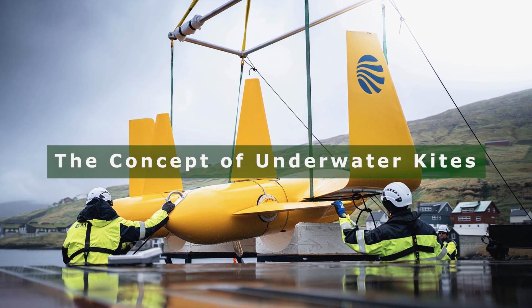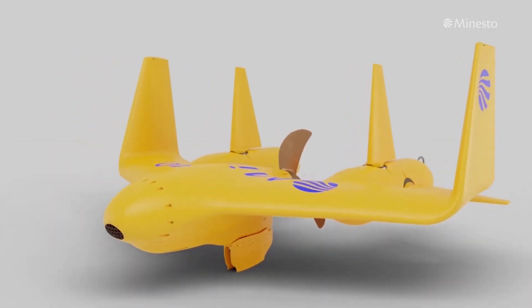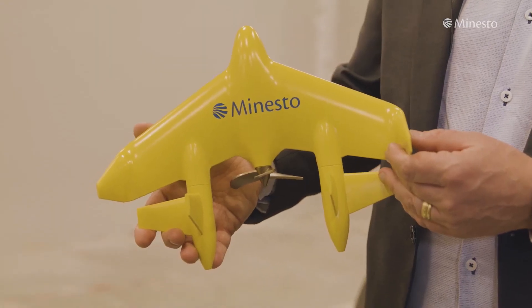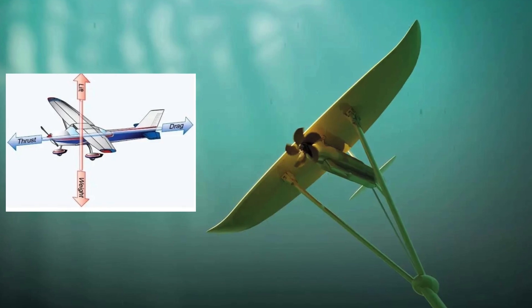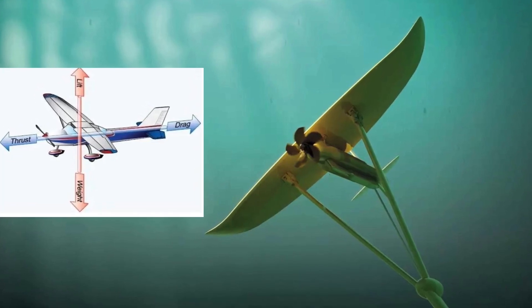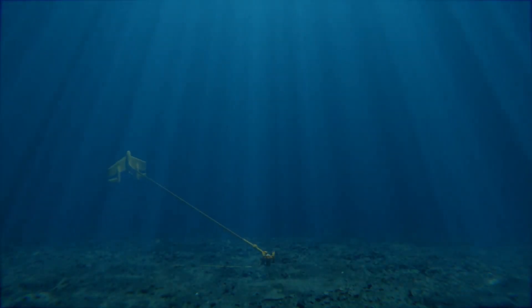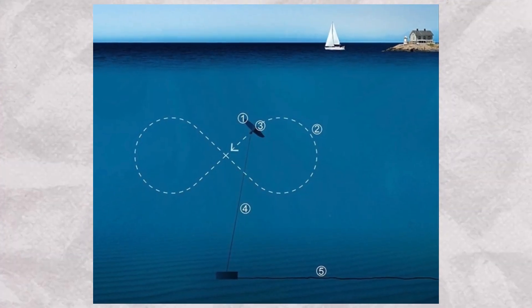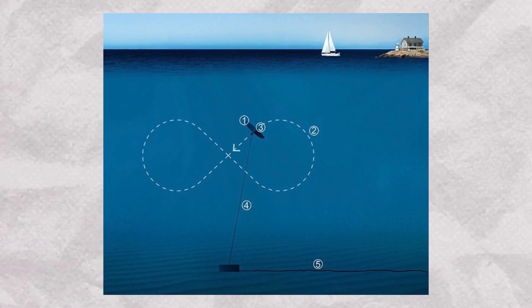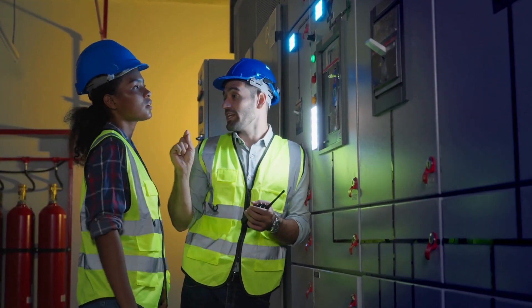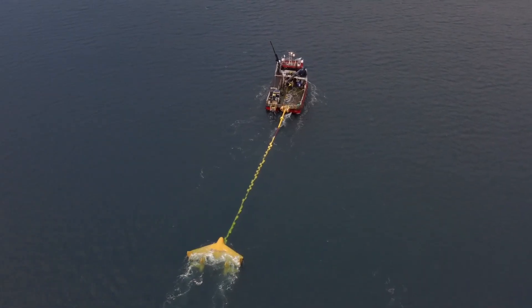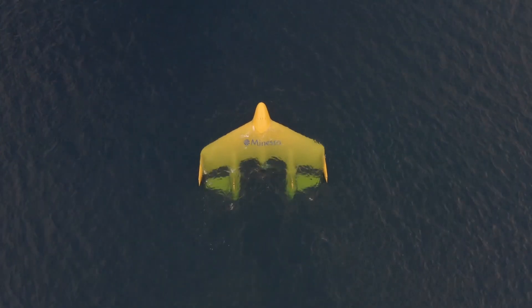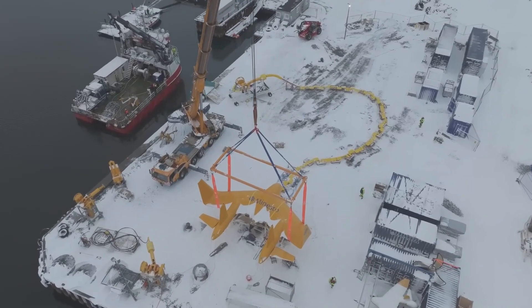At the heart of Manesto's technology is a unique underwater kite. Much like a kite flying in the wind, this device uses the principles of aerodynamics and hydrodynamics to harness the energy of underwater currents. The kite is tethered to the seabed and steered through the water in a predetermined figure of eight trajectory by an onboard control system. This movement through the water allows the kite to achieve speeds much higher than the actual current, significantly boosting its energy generation capability.